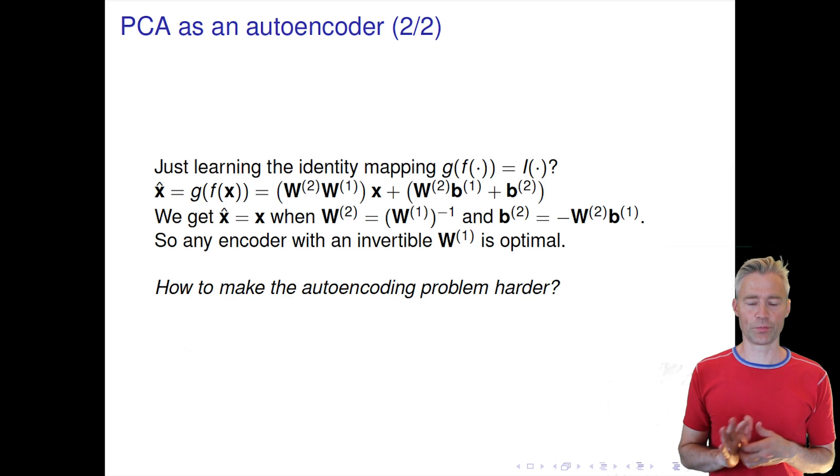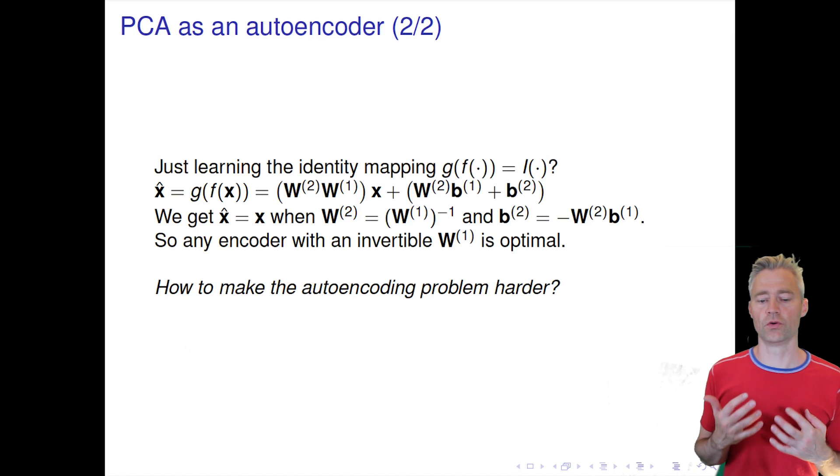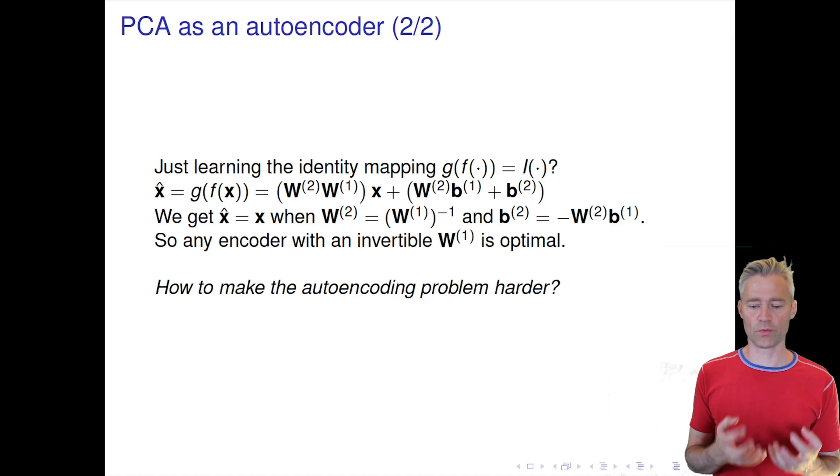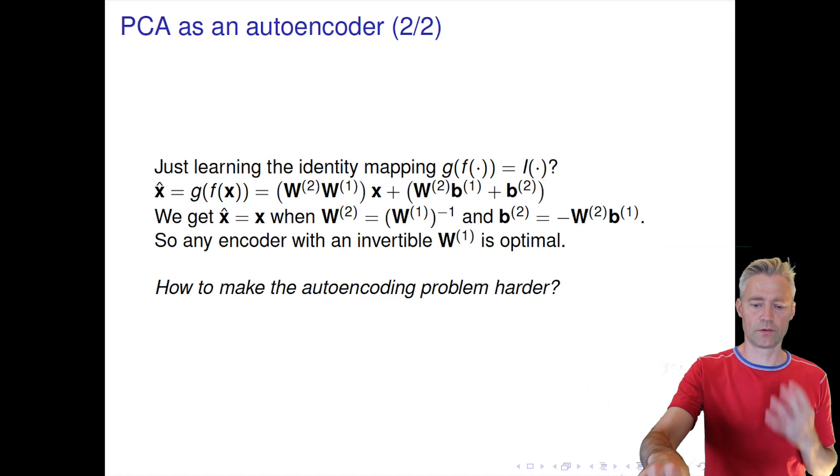But this also highlights the problem with autoencoders: we can learn the identity. So we need to make the problem somehow harder, or formulate it in a more clever way as we do in the variational autoencoder. But let's look first at the so-called denoising autoencoder as a way to make the problem harder by injecting noise.